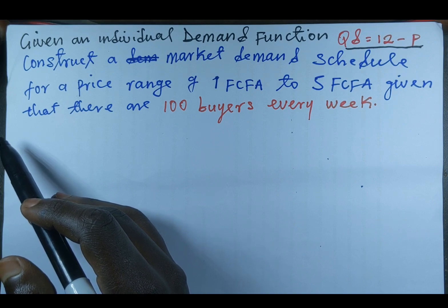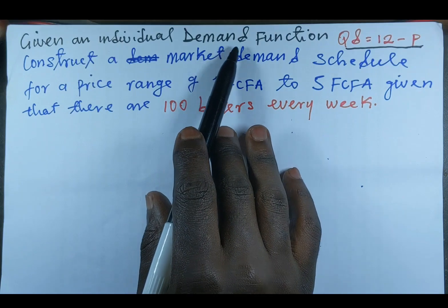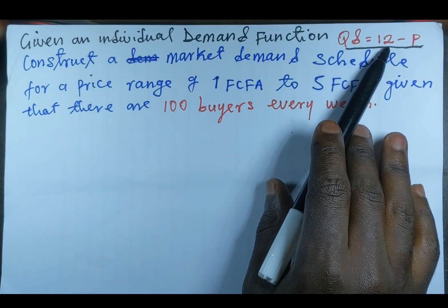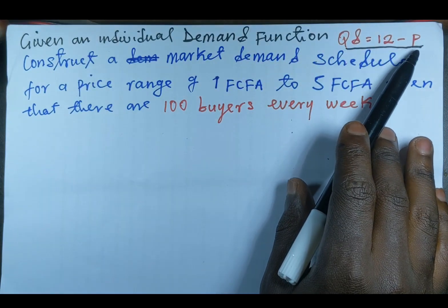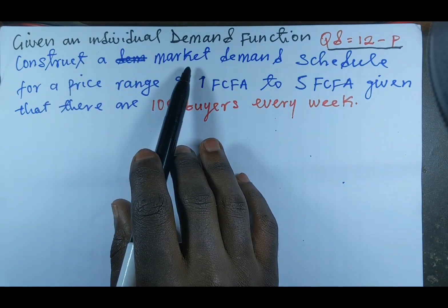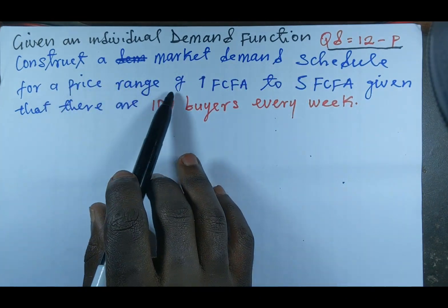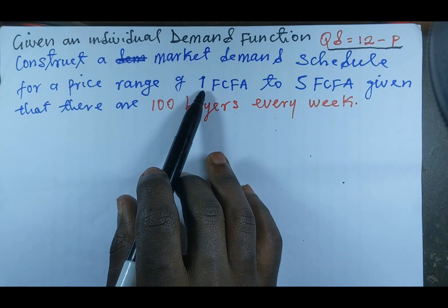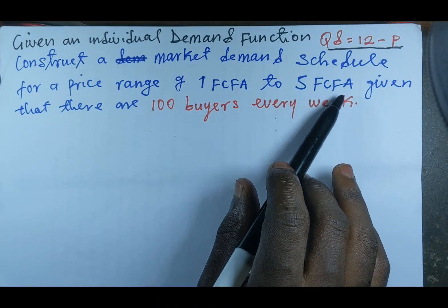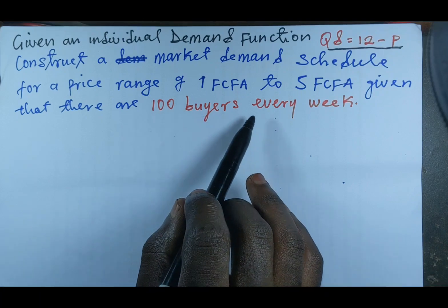Given an individual demand function Qd = 12 minus P, construct a market demand schedule for a price range of 1 FCFA to 5 FCFA, given that there are 100 buyers every week.